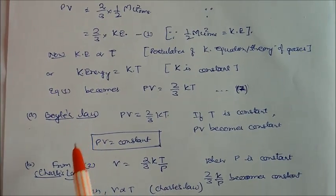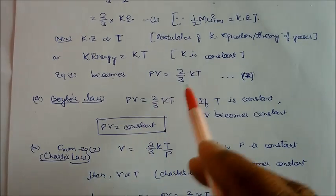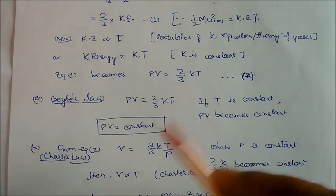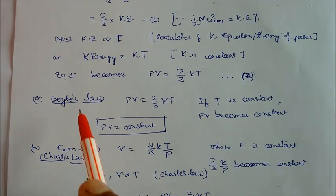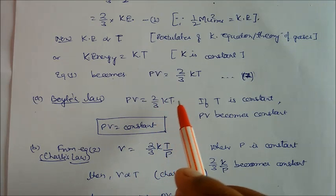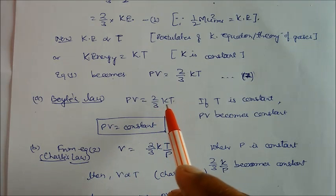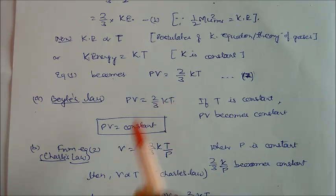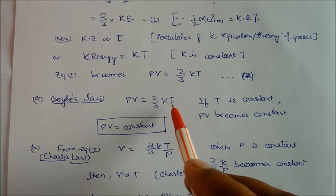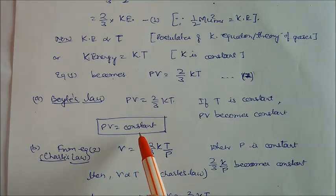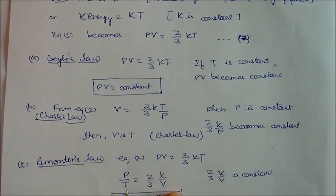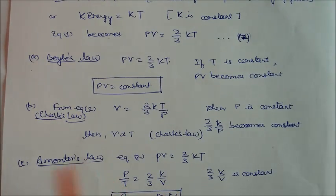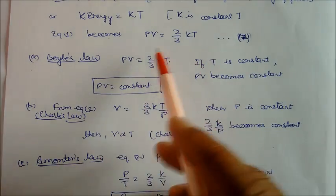Now we will derive Boyle's Law from this kinetic gas equation pV = (2/3)KT. If we keep temperature T constant, then (2/3)KT becomes a constant, since K is also constant. Therefore, pV = constant, and Boyle's Law is derived.